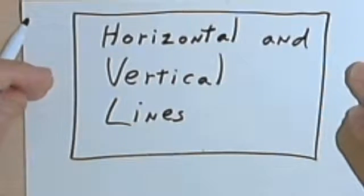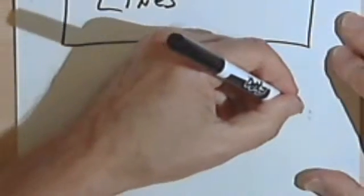This video is going to be about horizontal and vertical lines. And as you know, a horizontal line is one that goes left and right across. It's like the horizon, which is why it's probably called a horizontal line.